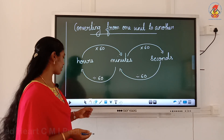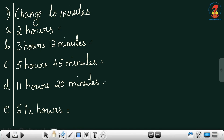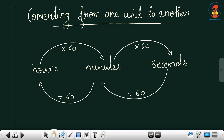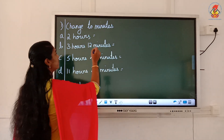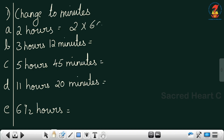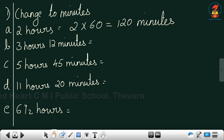We are going to do questions based on this. First one: change to minutes. The questions are given in hours, and you have to write the final answer in minutes. To convert from hours to minutes, multiply by 60. So 2 hours: 2 into 60. What is 2 into 6? That's 12, then add a zero — so you get 120 minutes.